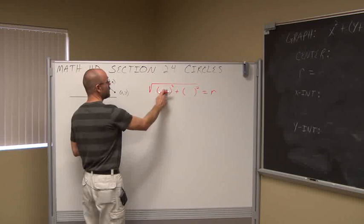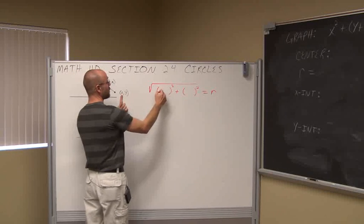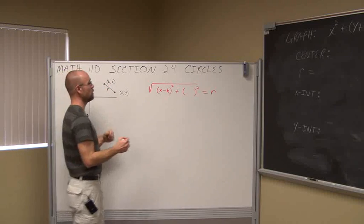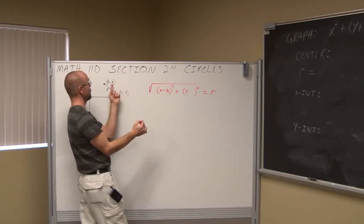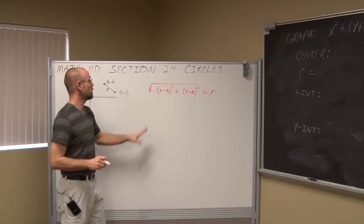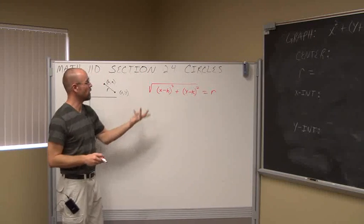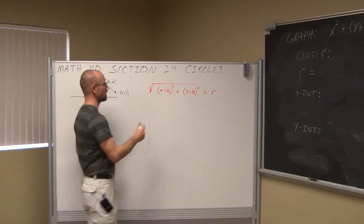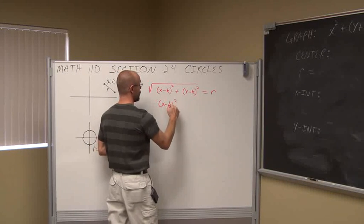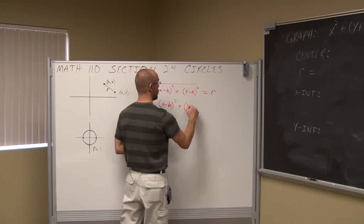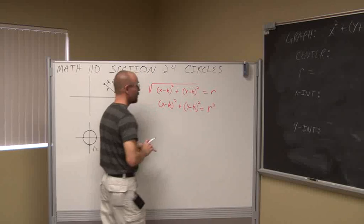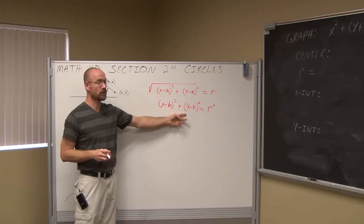Using the distance formula, we take the square root of the change in x squared plus the change in y squared, which equals r. The change in x is x minus h, and the change in y is y minus k. To eliminate the square root, I'm just going to square both sides — the square root goes away. Basically, this is the equation of a circle.